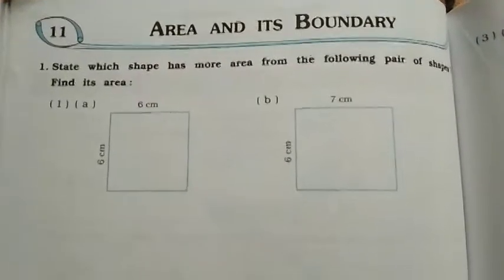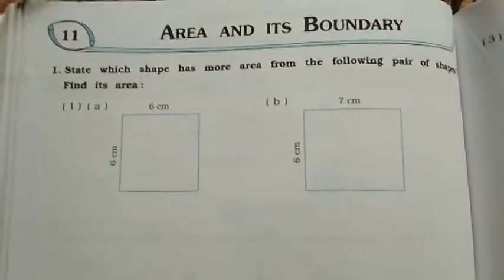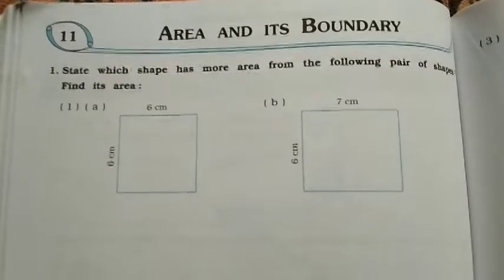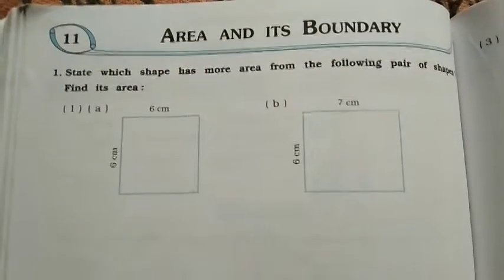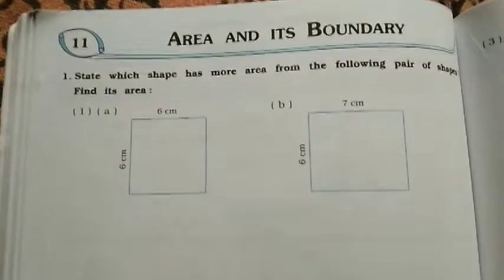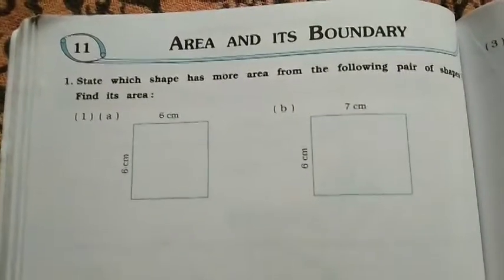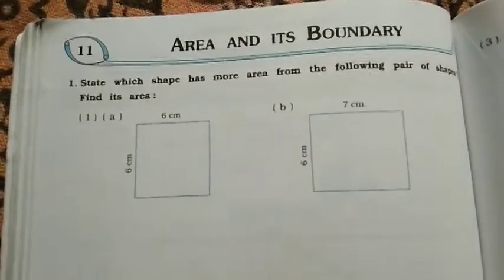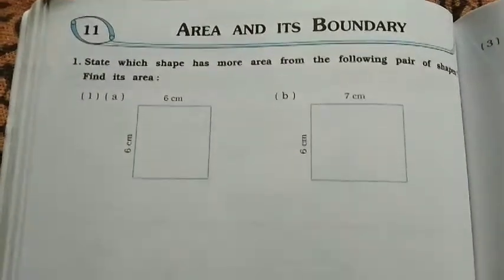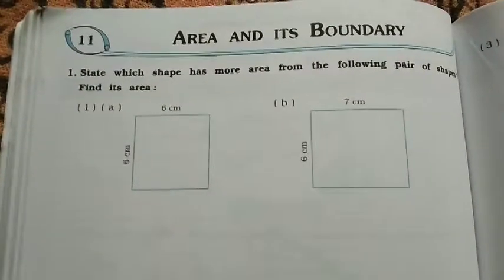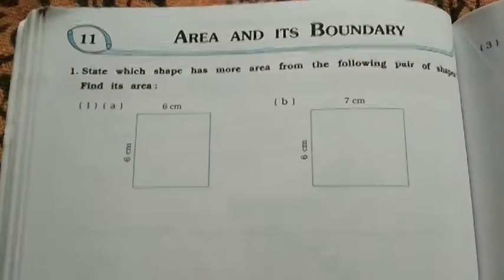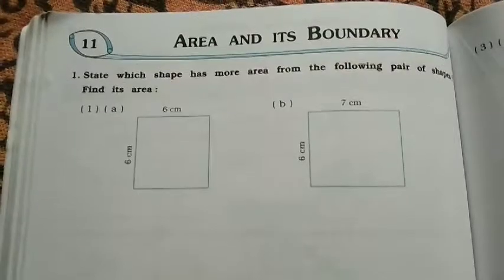Fifth class, now we're discussing Chapter 11: Area and its Boundary. For any shape, you know that area - what is area? Area is for any shape, how much region is covered by this shape. This is called the area of this shape. And its boundary - the outline, the distance of the outline of the shape, is called the boundary of the shape.